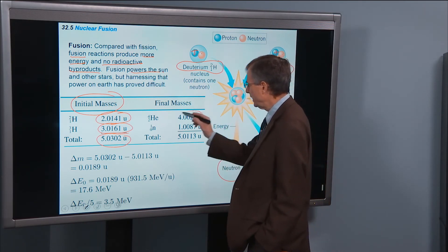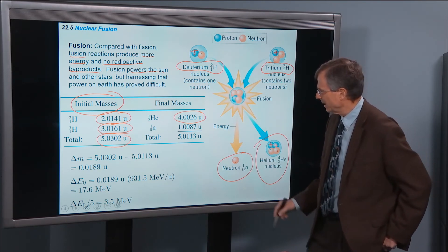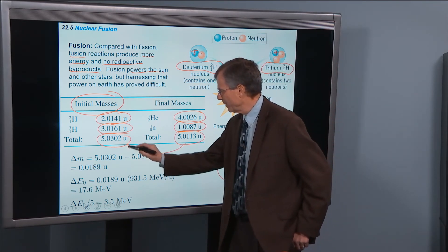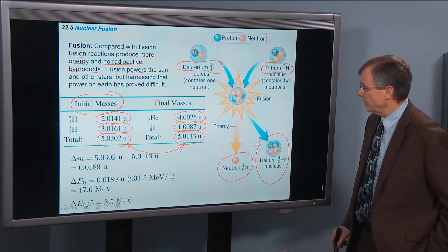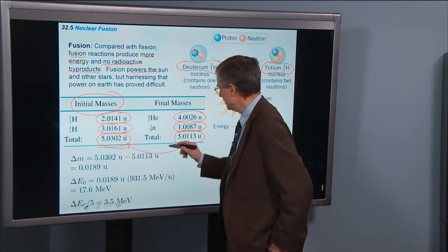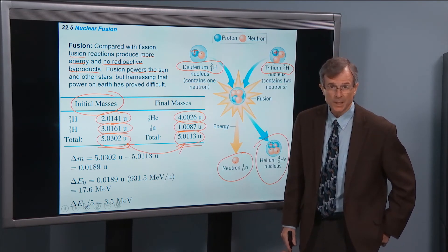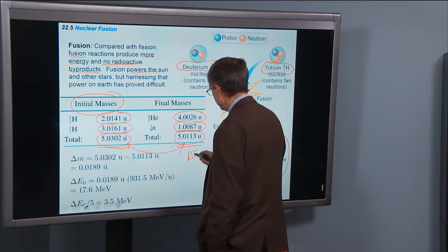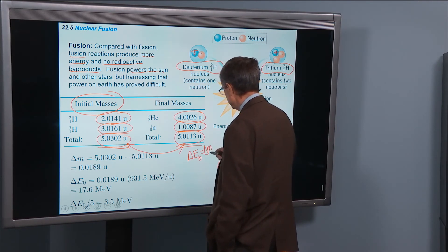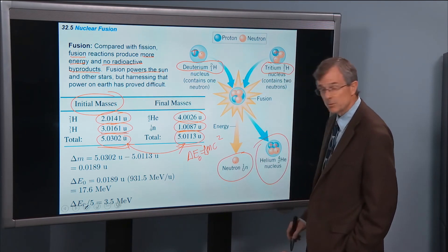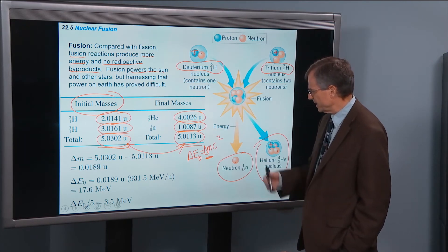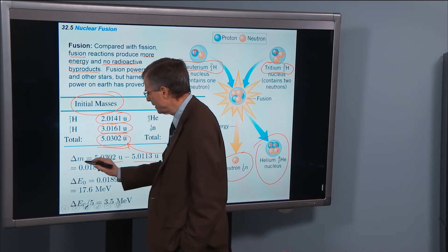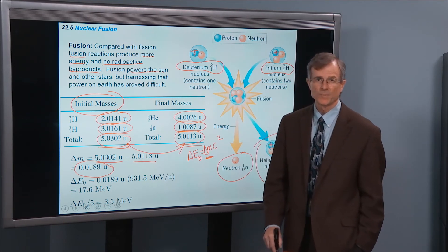What about the products? We've got a helium nucleus with a mass of 4 point something. A neutron for a total mass of 5.01. And you say, well hang on. If I compare these two, they don't match up. Between when we started with this reaction and when we ended with this reaction, we lost some mass. Where did it go? And the answer is into energy through Einstein's famous equation.